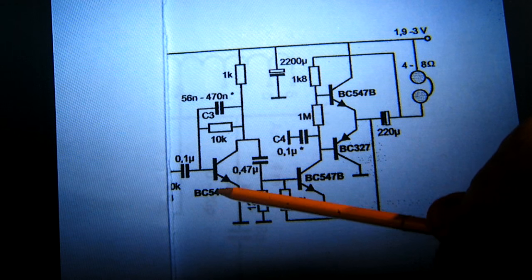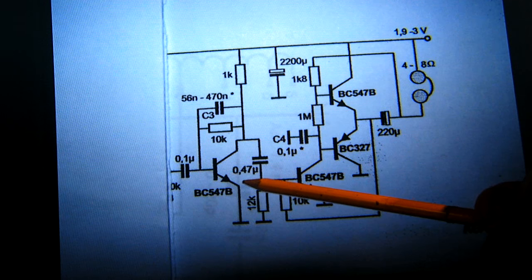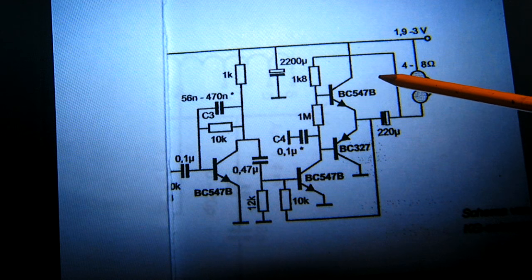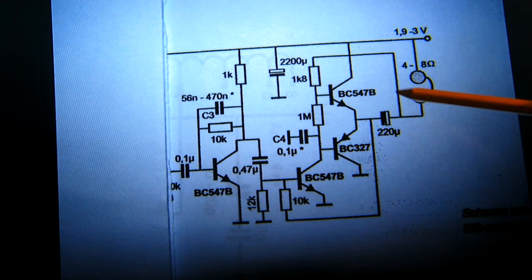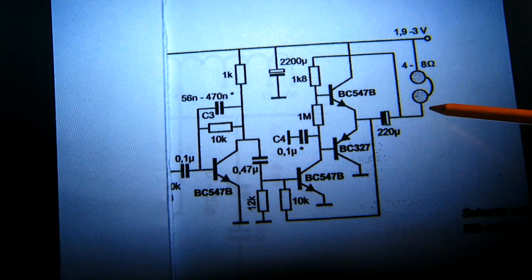So here's the input, the BC547B, and here the output to the electromagnetic telephone.